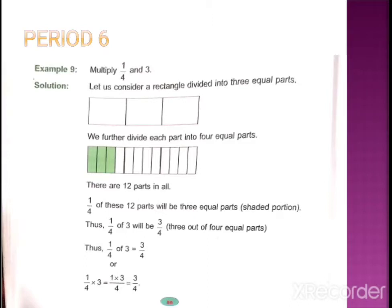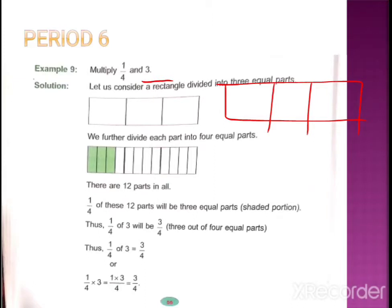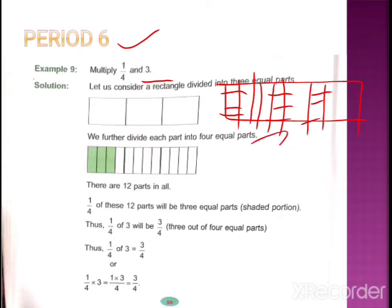Let's learn with a few examples from your book. The first example: if we have to multiply 1/4 and 3, how can we do it? First, I have taken one part which has been divided into three equal parts to represent 3. Now as we have to multiply by 1/4, we will convert one part into four parts to represent one-fourth. One-fourth means one part out of four — so one-fourth of each of the three parts.